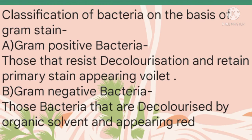On the basis of Gram staining, bacteria are classified into two categories: Gram positive and Gram negative. Gram positive bacteria resist decolorization and retain the primary stain, appearing violet. Gram negative bacteria are decolorized by organic solvent and appear red. The remaining part of this topic will be discussed in the next lecture.